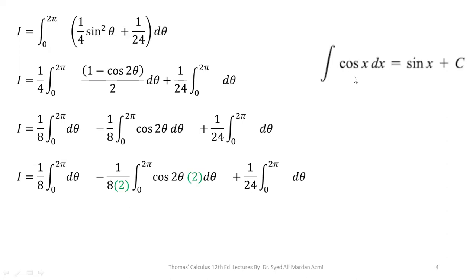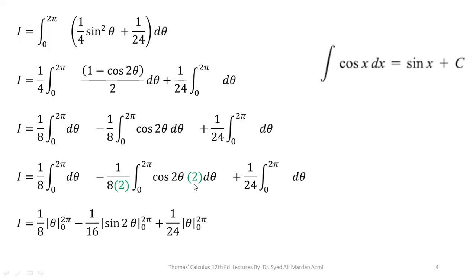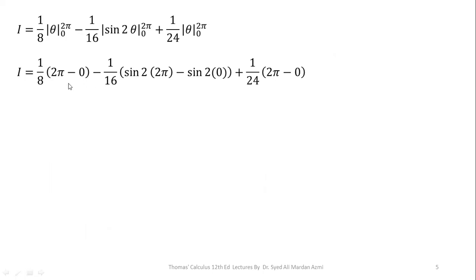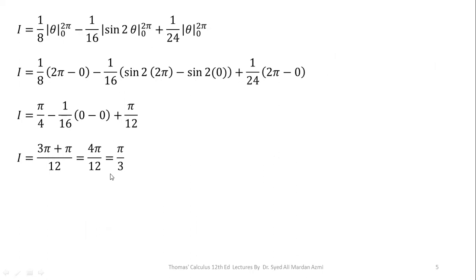Remembering that the integration of cos is sine, we perform the integration: 1/8 remains as is and integration of dTheta is Theta for limit 0 to 2π, minus 1/16 — integration of cos 2Theta times 2 gives sine 2Theta for limit 0 to 2π — plus 1/24 into Theta for limit 0 to 2π. Applying the fundamental theorem of calculus, upper minus lower limit for each term: we have 2π minus 0 from the first term, sine of 4π minus sine of 0 from the second term, and 1/24 times 2π from the last term. Since sin 4π equals 0 and sin 0 equals 0, we have π/4 from the first term and π/12 from the third term. Taking the LCM and simplifying, our final answer is π over 3.